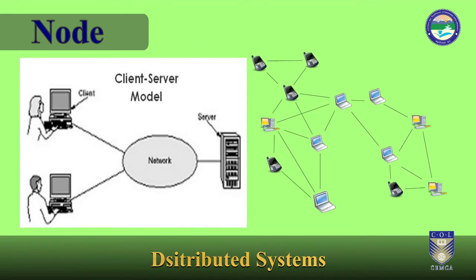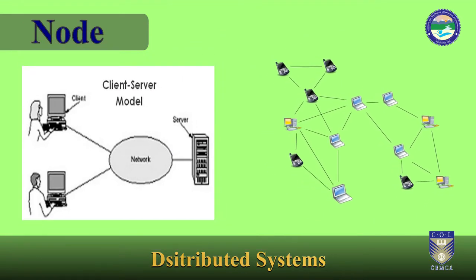If the network in question is a distributed system, the nodes are client, servers or peers. A peer may sometimes serve as client, sometimes server. In a peer-to-peer or overlay network, nodes that actively route data for other network devices as well as themselves are called super nodes. Distributed systems may sometimes use virtual nodes so that the system is not oblivious to the heterogeneity of the nodes. This issue is addressed with special algorithms like consistent hashing, as is the case in Amazon.